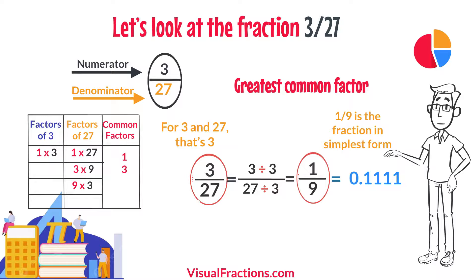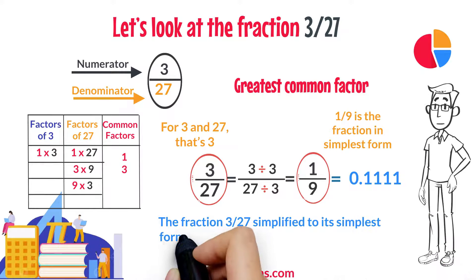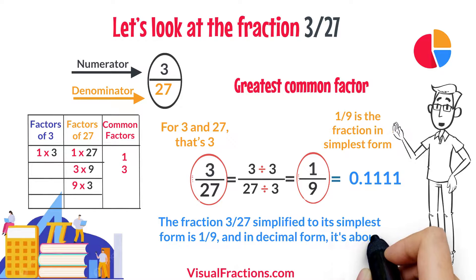So, there you have it. The fraction 3 27ths simplified to its simplest form is 1 9th, and in decimal form, it's about 0.1111.